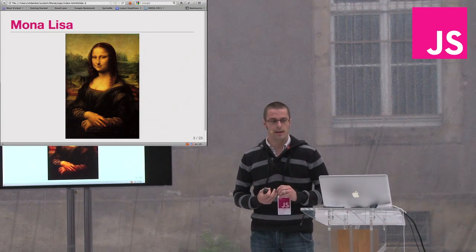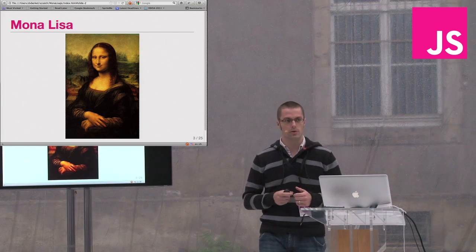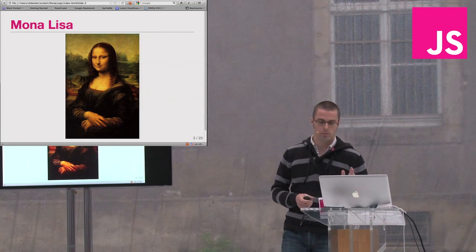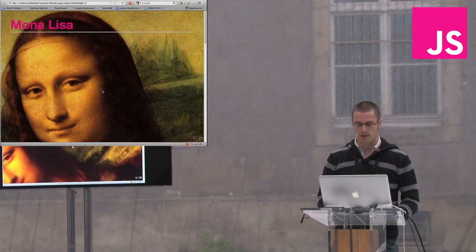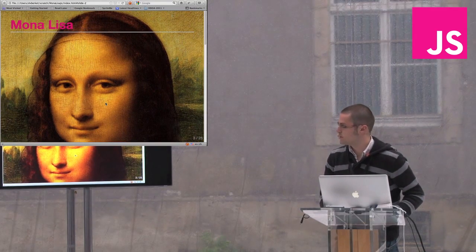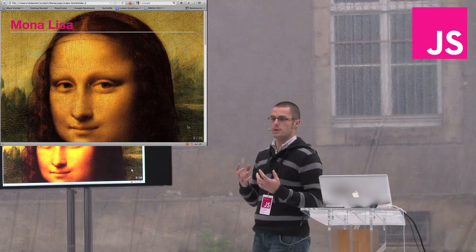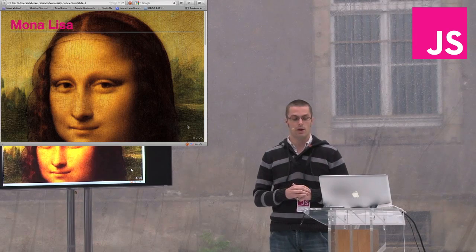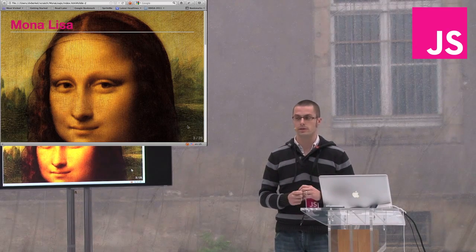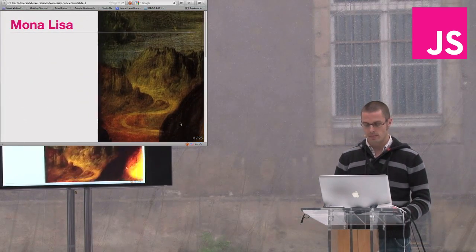So the Mona Lisa — she's very well known. Everybody raised their hand. But she's a mysterious woman. She's very well known because of the enigmatic smile, just shown at the bottom here. There's a lot of talk about why she smiles like this. There's even a whole Wikipedia page with conspiracy theories. But I think I know why she's smiling, and it has to do with another detail of the painting — namely, this road.